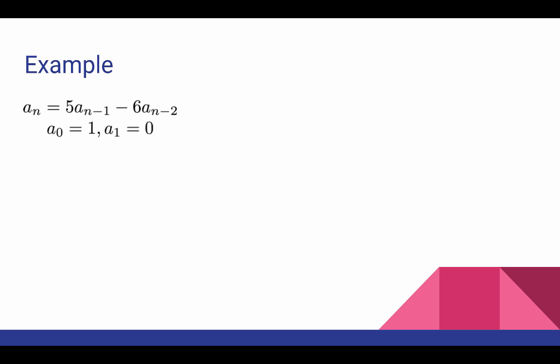Now we saw earlier that the characteristic equation for this recurrence relation is r^2 - 5r + 6 = 0. And so the characteristic roots are three and two. These are distinct roots and so we can set up our framework by just plugging in the roots, but leaving the c1 and c2 undetermined.